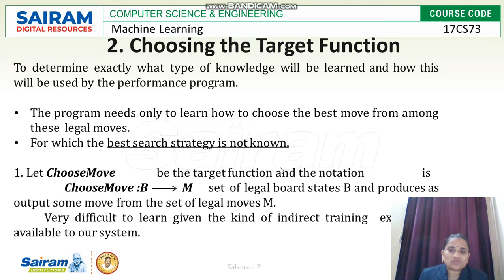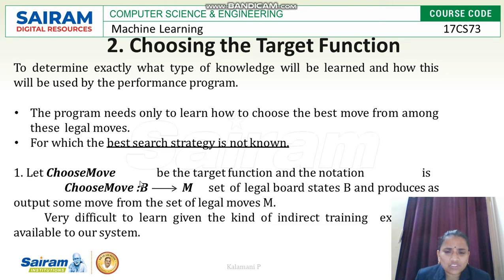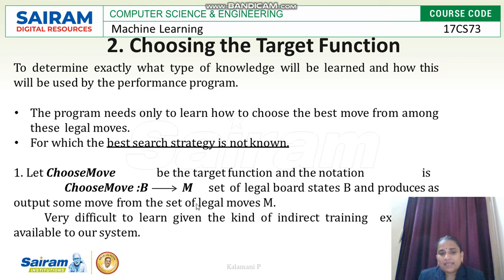The notation used is: Choose-Move from B to M, where B is the legal board state and M is the next legal move. This represents the target function as Choose-Move: B → M (legal moves). Learning this kind of indirect training example is very difficult, while a direct training example is very easy to represent.